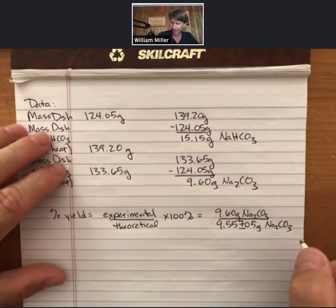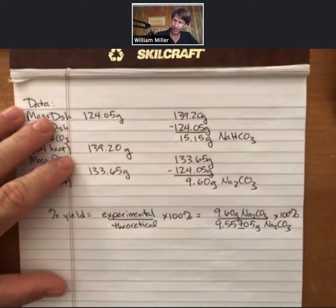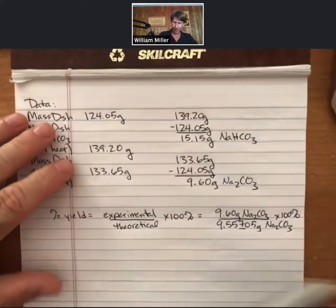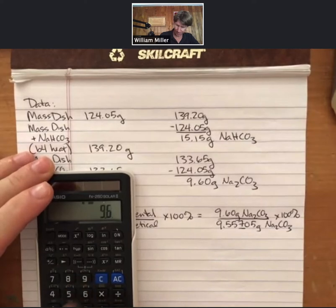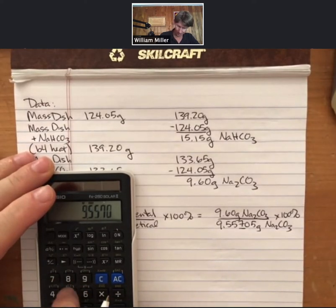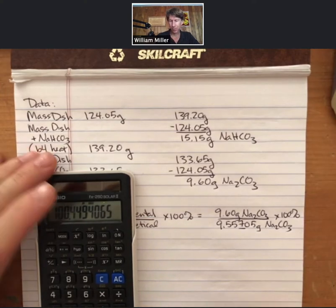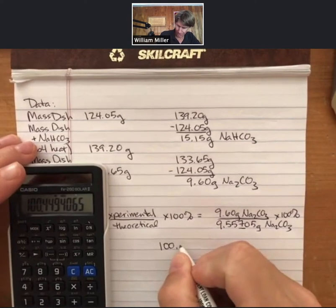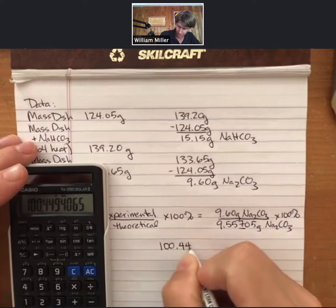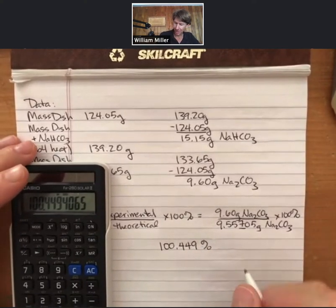I've underlined my fourth significant figure, entered my 100%, and then calculated the result.